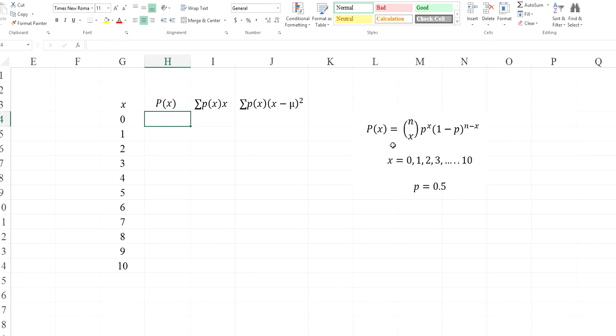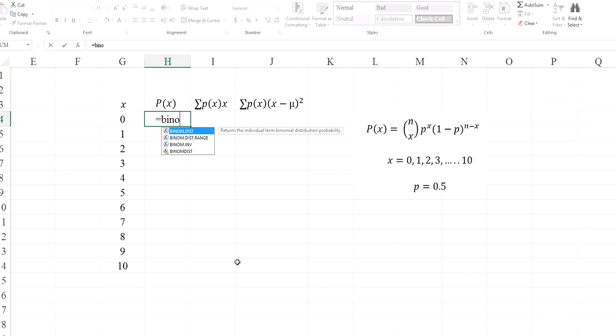So the probabilities, by using this formula, I'm going to use Excel built-in function, which is equal to BINOM.DIST. And then I'm going to put the cell reference 0. So I'm going to give the cell reference 0, number of times is 10, probability of head is 0.5, FALSE. False means I'm not looking for the cumulative probabilities. I'm looking for the individual event.